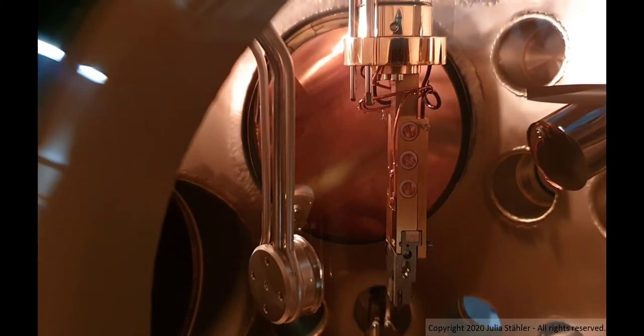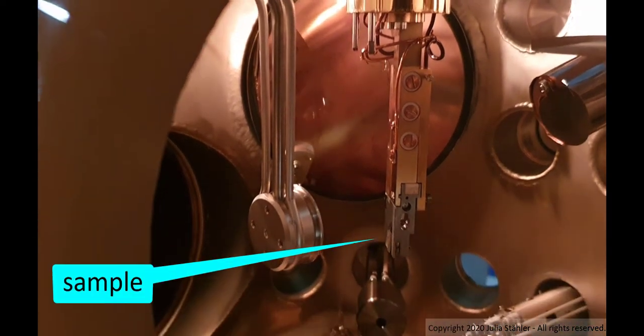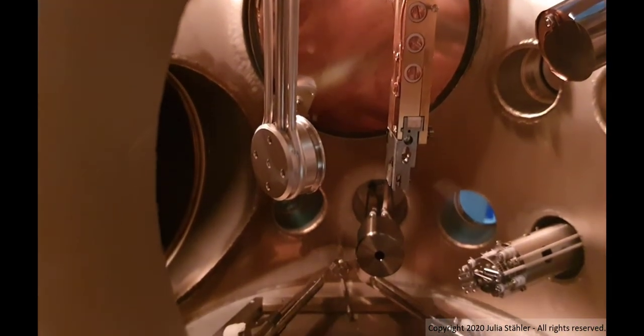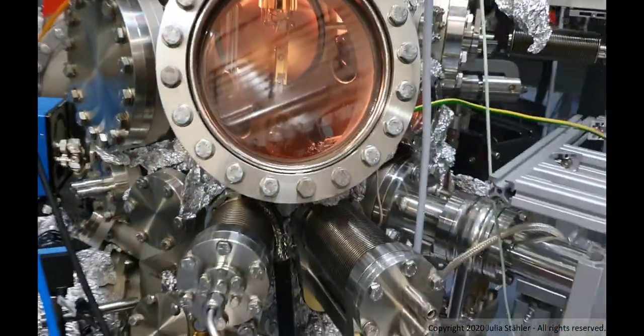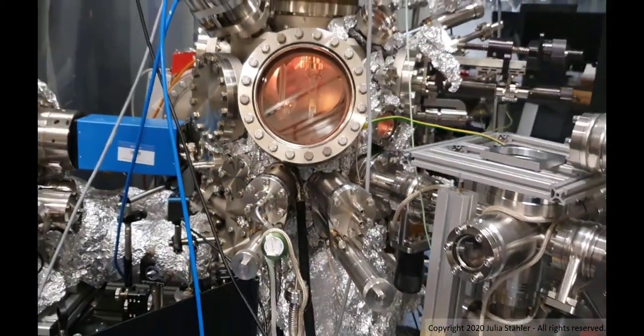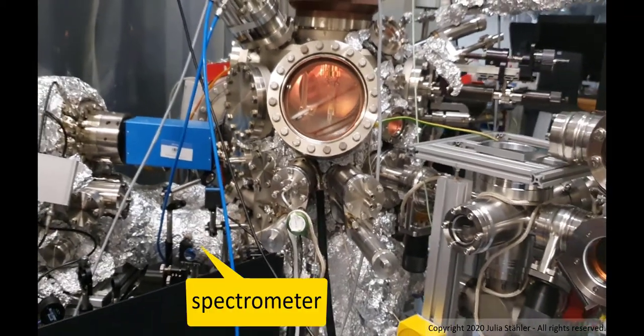What's important today is that our sample is inside the vacuum. And this sample can be moved down through this gate valve into the lower part of our vacuum chamber, facing the photoelectron spectrometer.